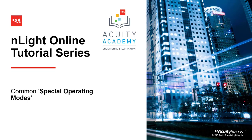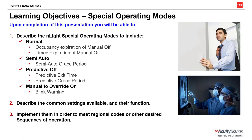Welcome to the InLight online tutorial series. Today, we're going to discuss some common special operating modes available within the InLight device portfolio. A special operating mode is a setting within an InLight output device, either InLight Air or InLight Wired, that dictates how the lights behave when presented with inputs from occupancy sensors, switches, and photocells. Special operating mode works in combination with a couple other settings to further adjust how the lights behave to meet different sequences of operation.